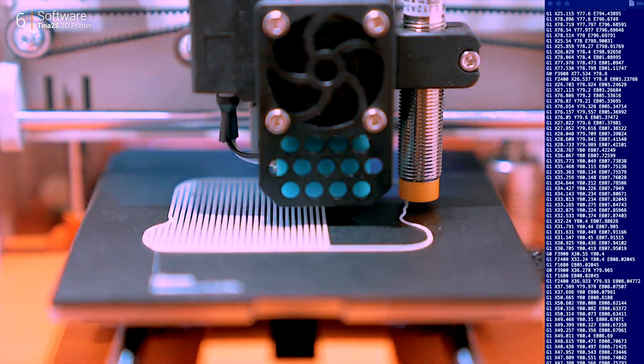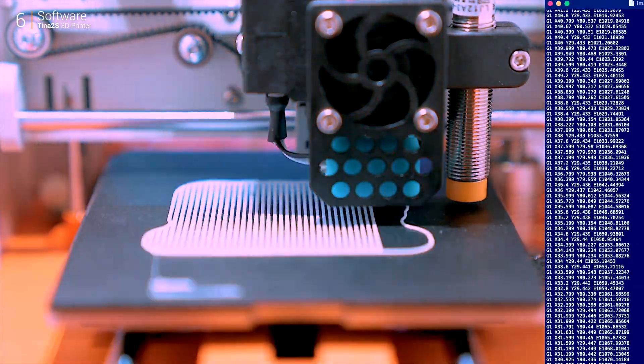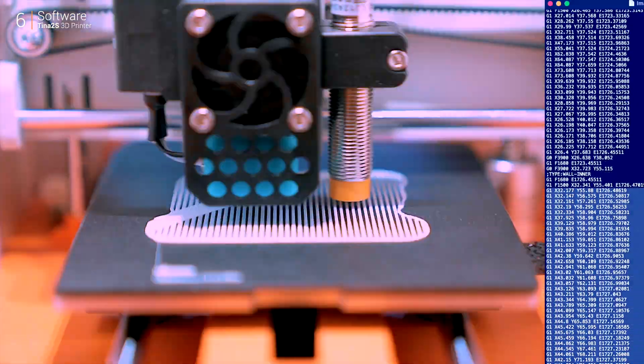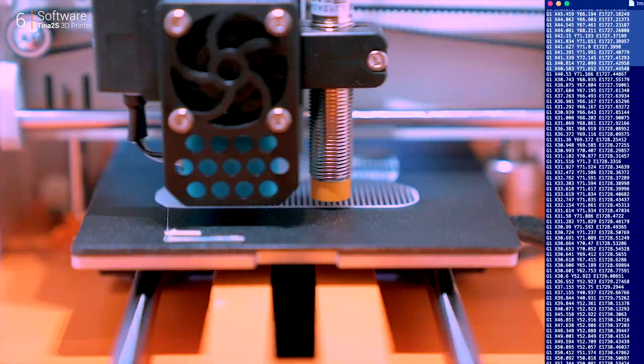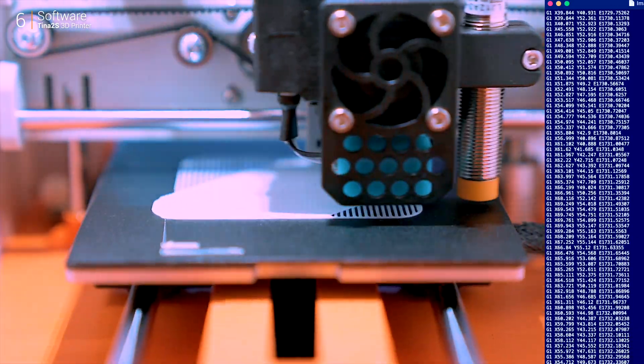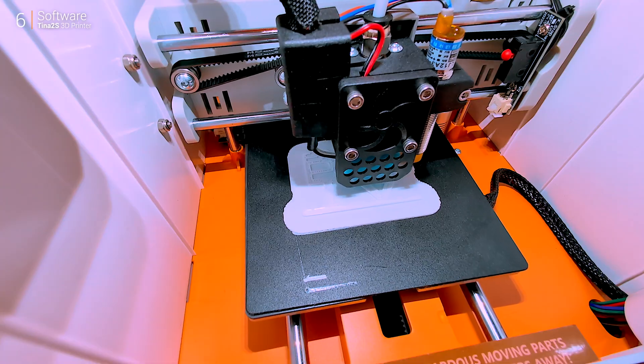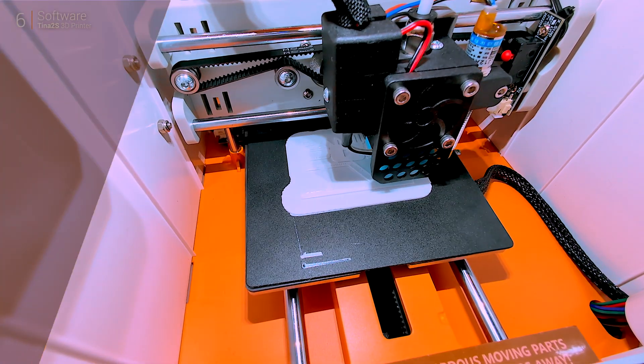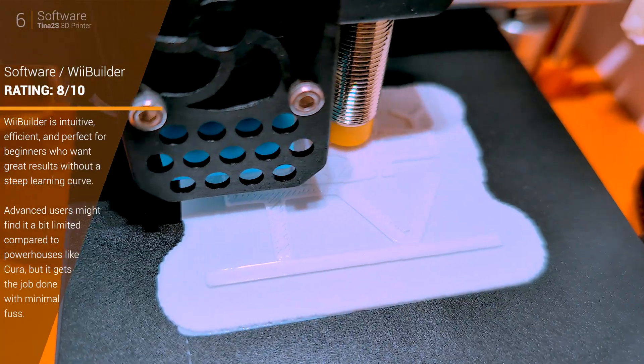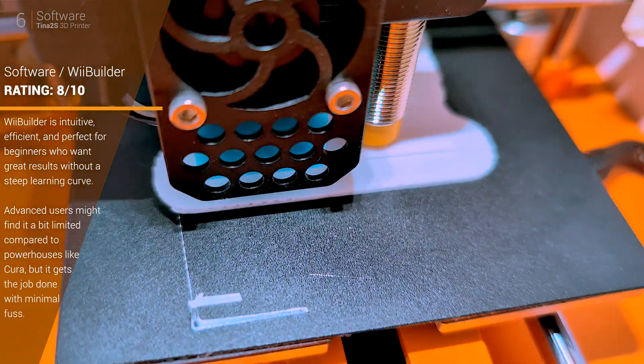The app and included USB cable make setup flexible. Use WiFi, print directly from your computer, or stick with an SD card if you're old school like me. There are plenty of websites offering free or paid 3D models. Once downloaded, load them into Webuilder, adjust the size, slice it, and you're ready to go.